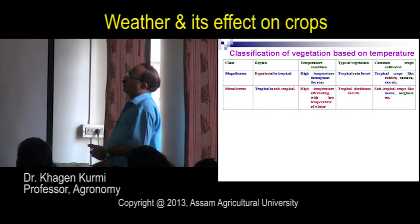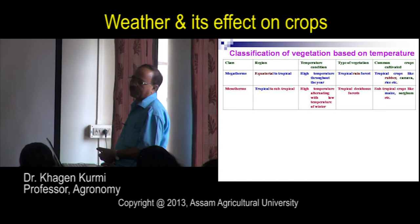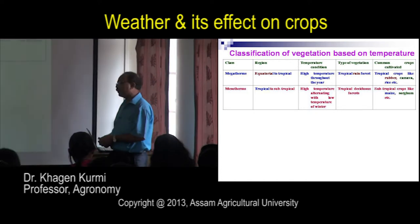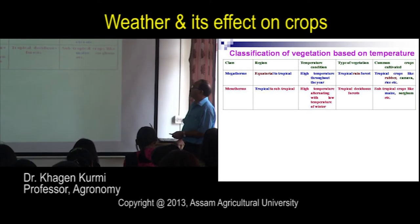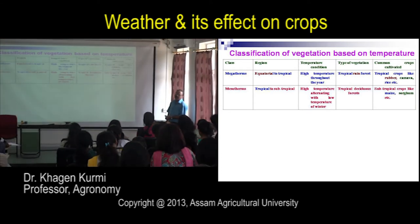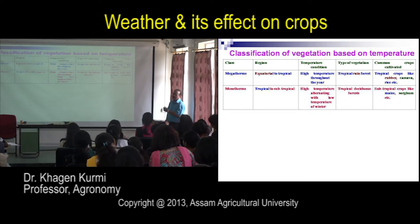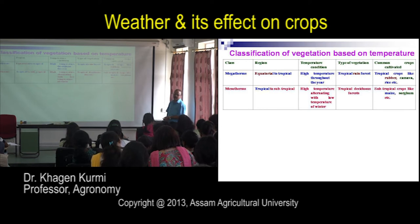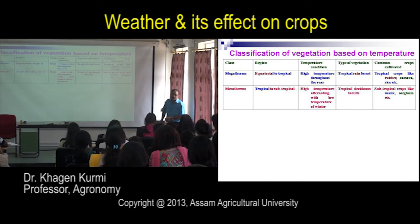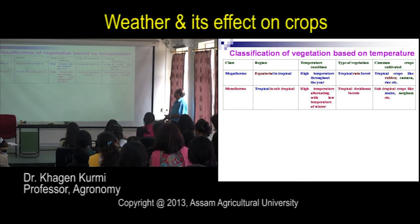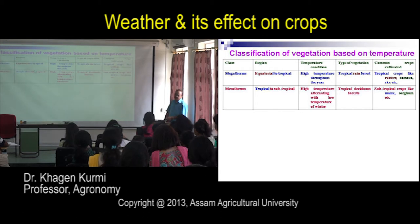Mesotherms are found in tropical to subtropical regions, where high temperatures occur during summer but alternate with low temperatures in winter — like our conditions. During winter in subtropical areas we get lower temperatures. Here tropical deciduous forests are found, where crops shed leaves during winter. Subtropical crops like maize, sorghum, and rice during summer season can be grown here.